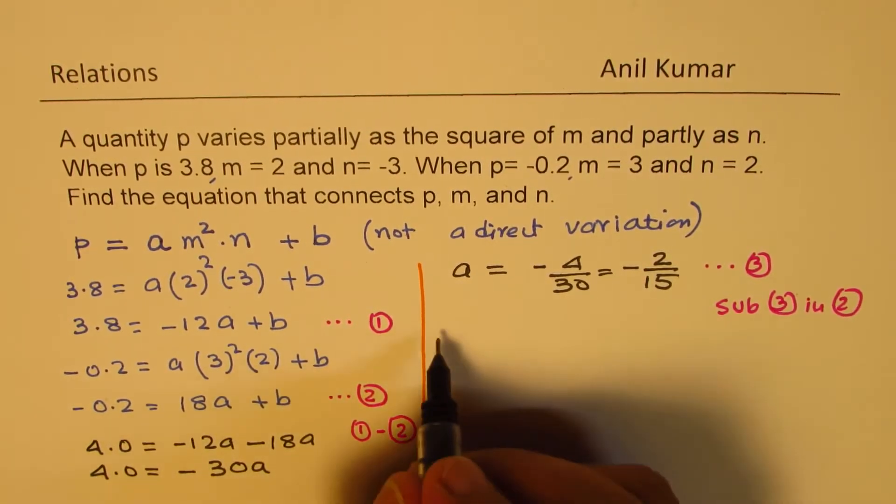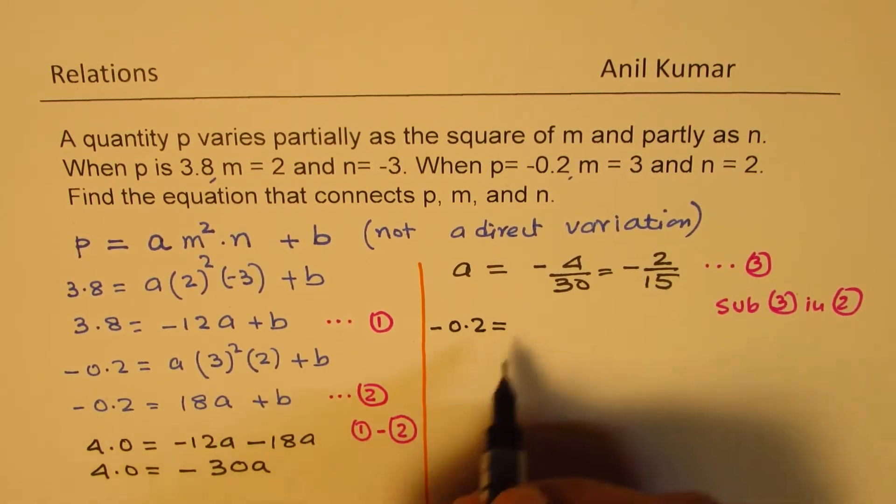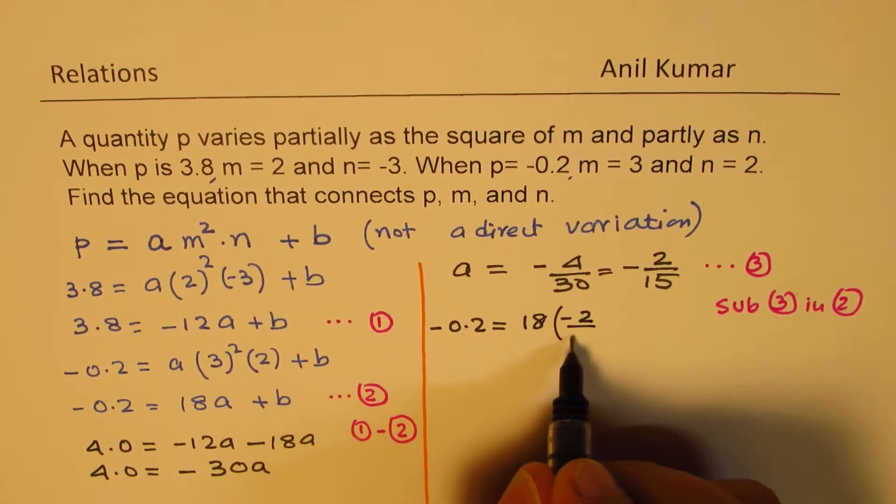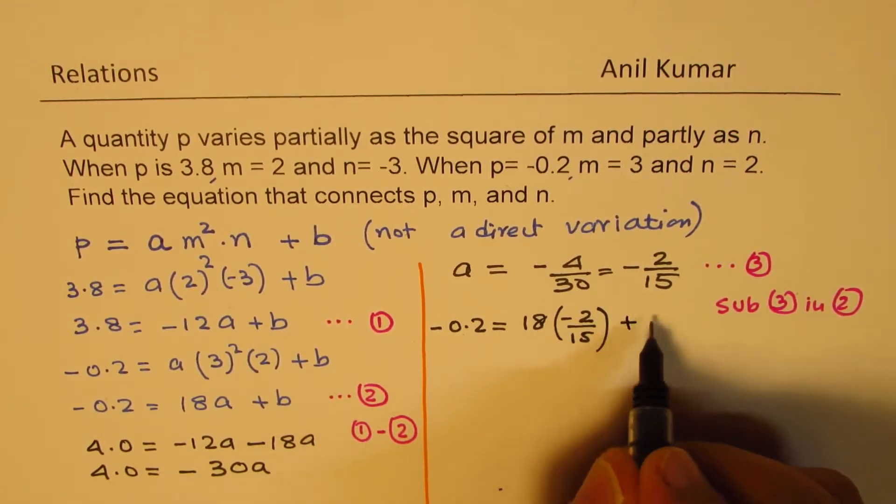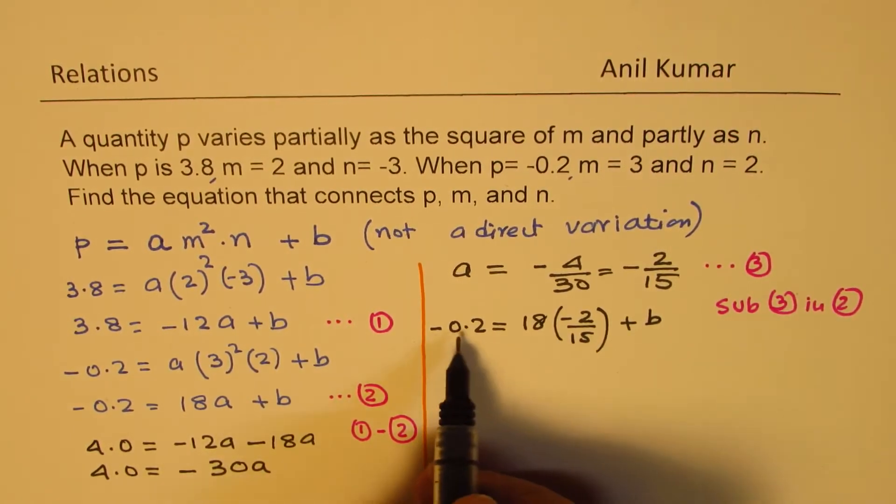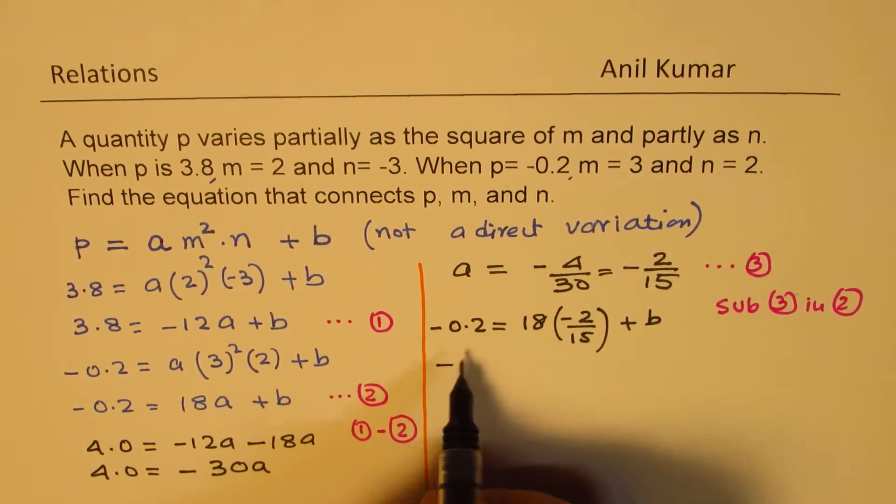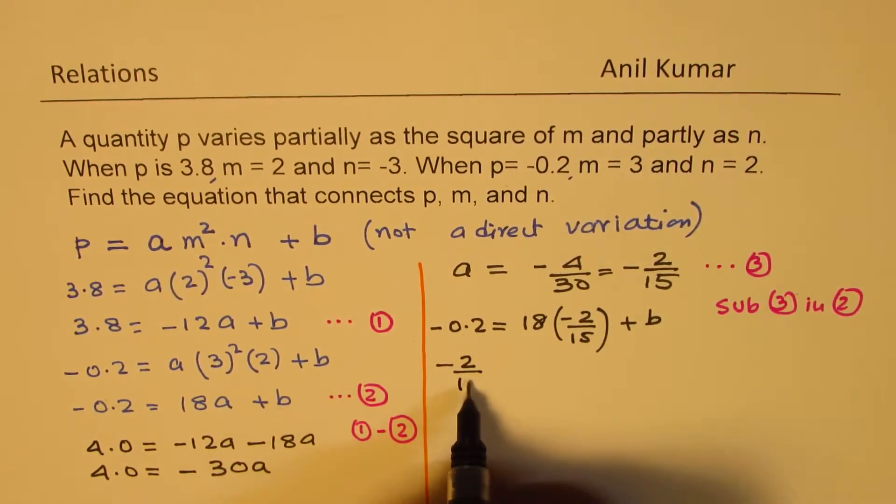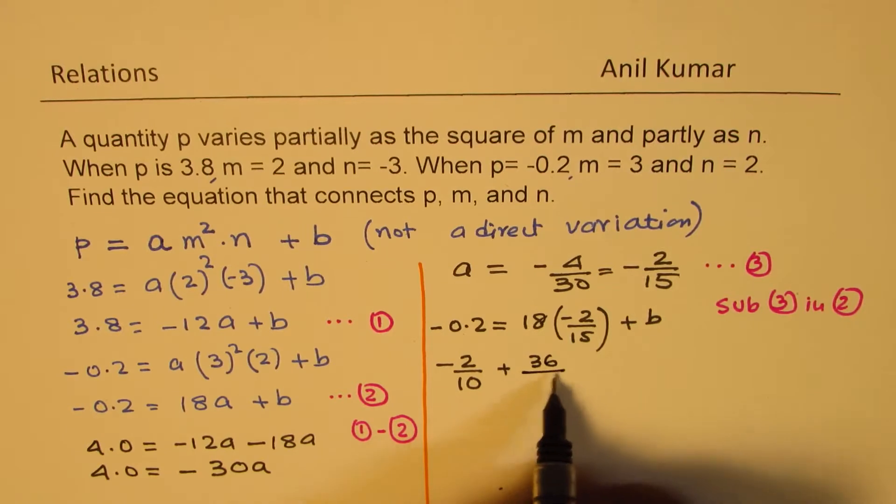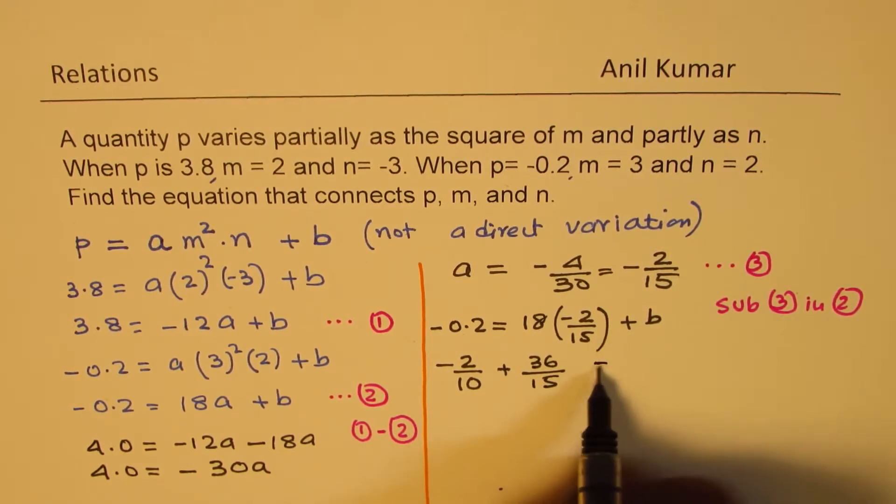So equation 2 is minus 0.2 equals to 18 times the value of A, which is negative 2 over 15, plus B. We'll take it on the right side. So let's write this also in fractions. We could write this as 2 over 10. Taking this becomes plus, we can simplify this. So let me write this as first 18 times 2 is 36 over 15 for time being. We'll simplify this. Equals to B.